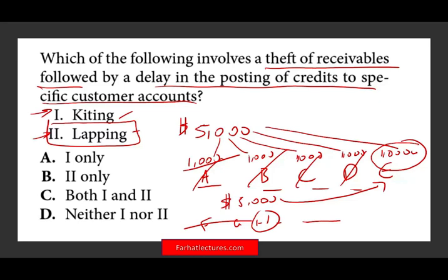How can a company eliminate lapping? The person that posts to the account should not also deposit the money. We have a segregation of duties: depositing the check and crediting the account should be two separate people. Kiting is when you make money appear in two different bank accounts at the same time. The definition asked about here is lapping, which I also cover in my auditing course.